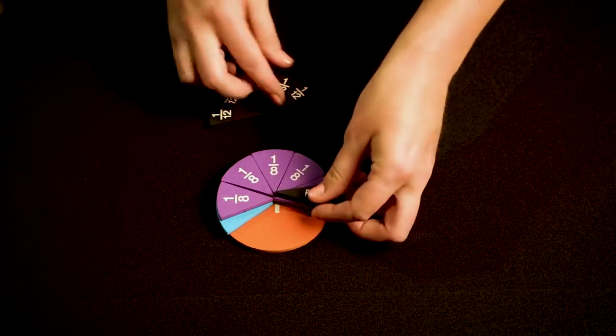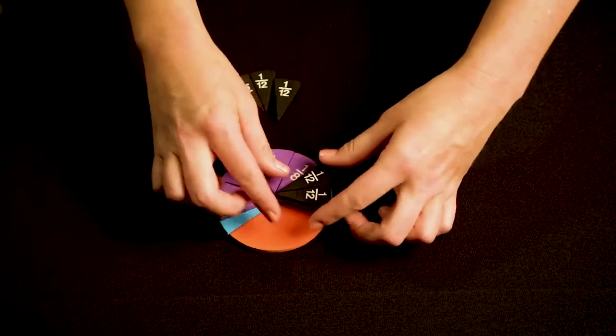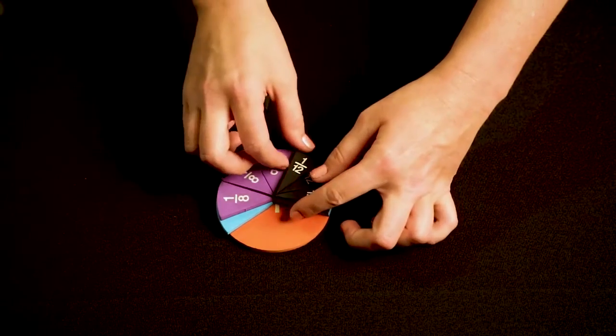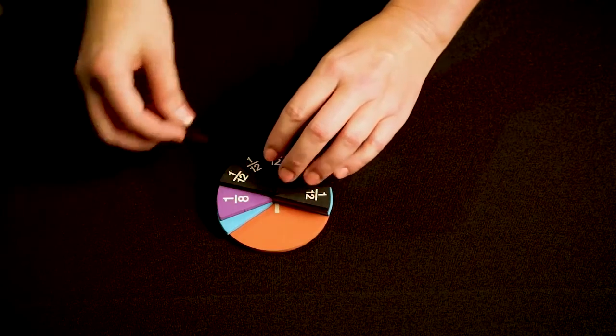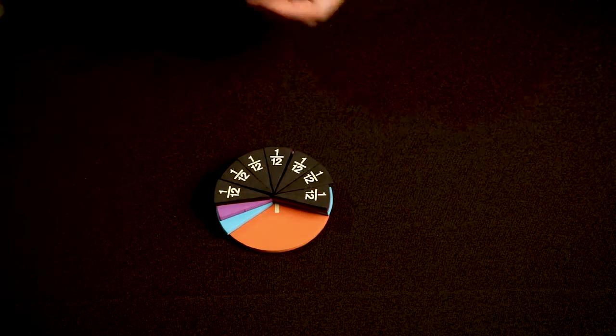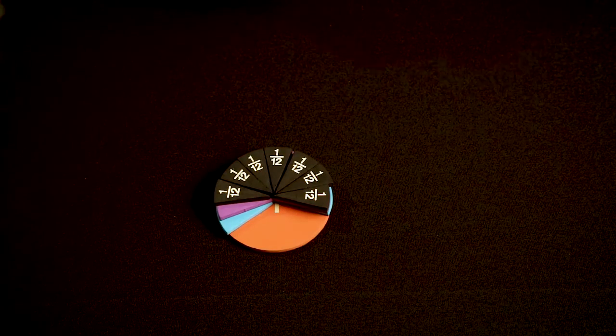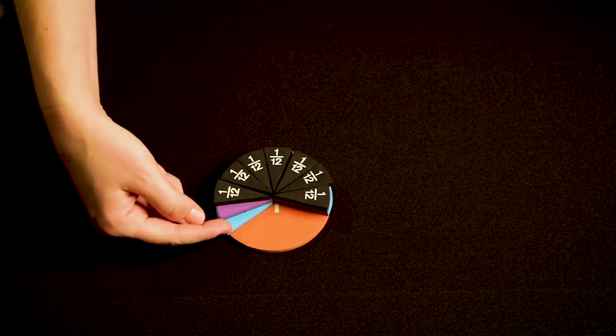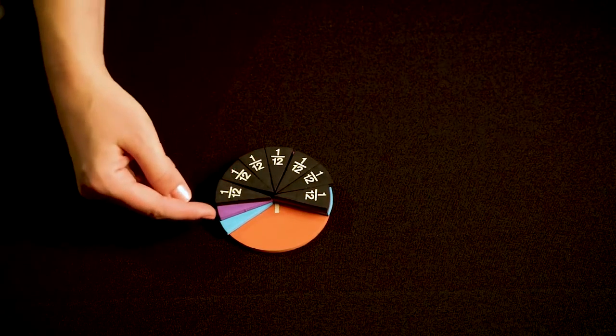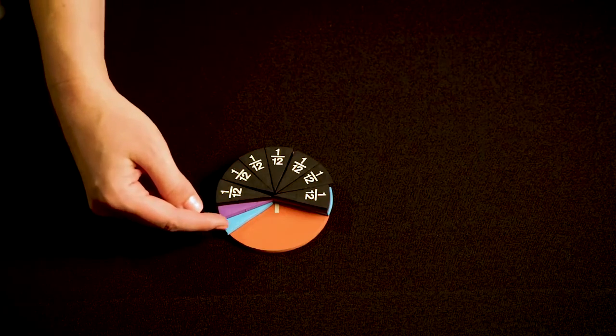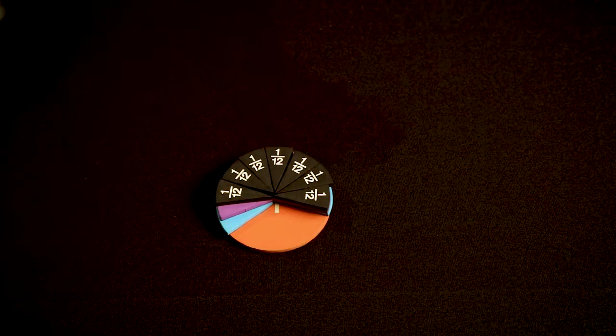And now I'll work on 7 twelfths. I'll place 7 twelfths right on top. And so I can see that 7 twelfths is less than 5 eighths. So 4 sixths is greatest and 7 twelfths is the least. So 7 twelfths is less than 5 eighths and less than 4 sixths.